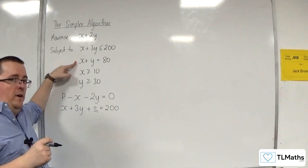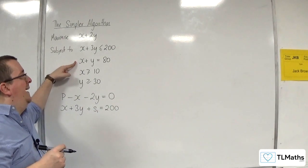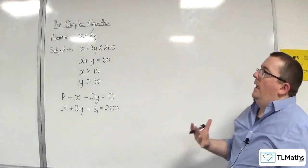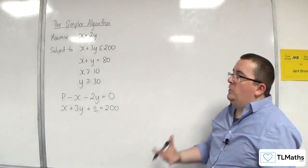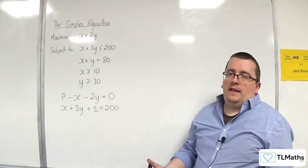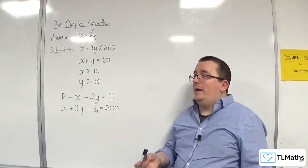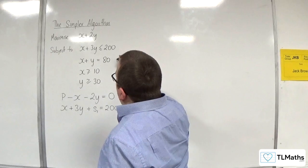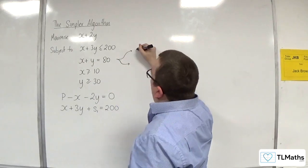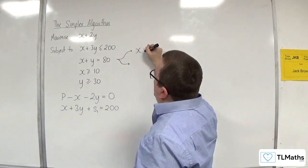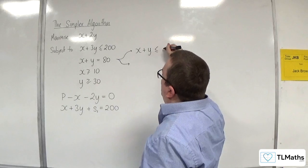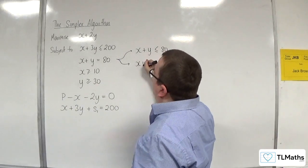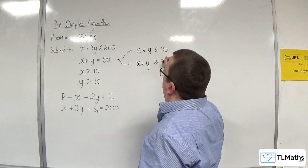How are we going to deal with x plus y is equal to 80? When you have an equality, how we deal with that in the simplex algorithm is we split it up into two inequalities: one is x plus y less than or equal to 80, and the other is x plus y greater than or equal to 80.